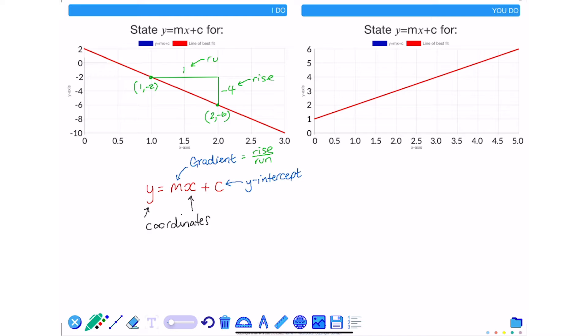The run is 1. So the gradient of this line is negative 4 divided by 1 which is negative 4.